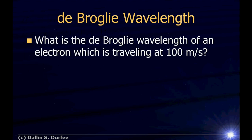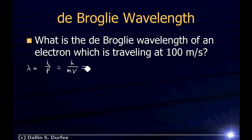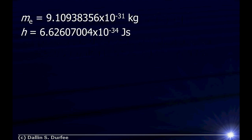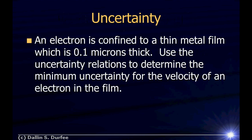Next problem: what's the de Broglie wavelength of an electron traveling at 100 meters per second? This one's easier — I know the velocity. I can go right to lambda equals h over p. Since 100 meters per second is way slower than the speed of light, this is not relativistic, so momentum is just mv. I'll let you plug in the mass of the electron and Planck's constant and work that out.